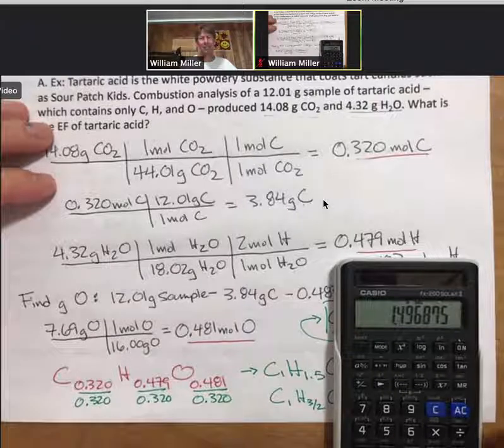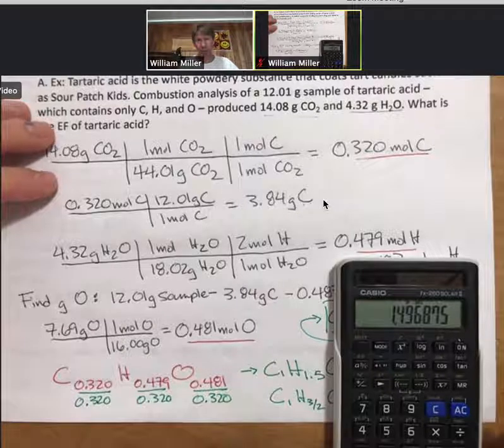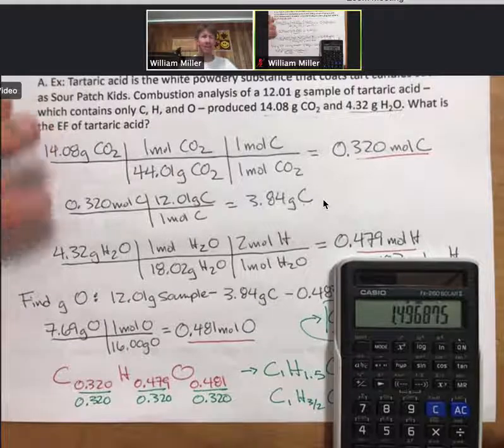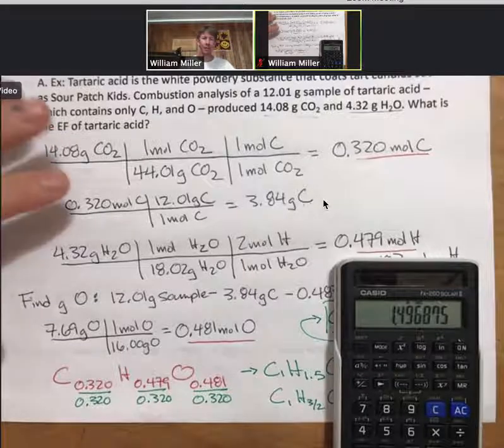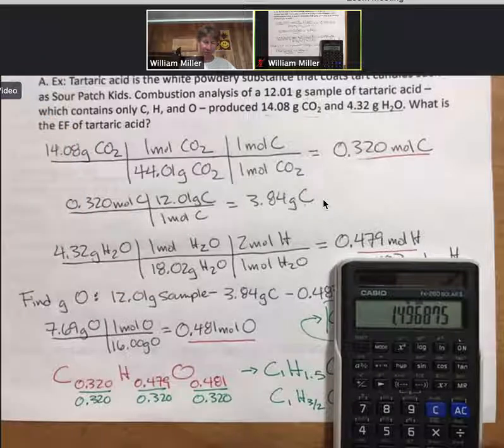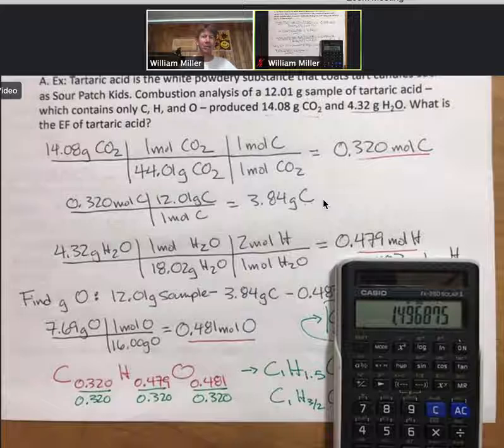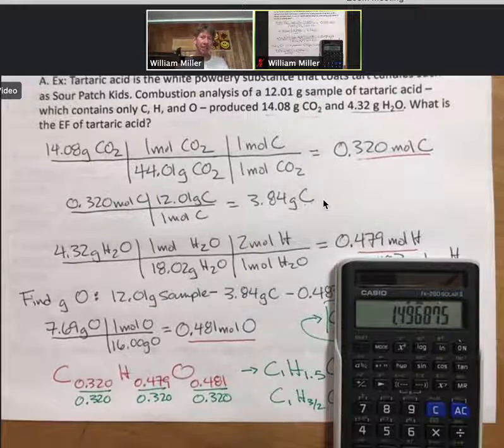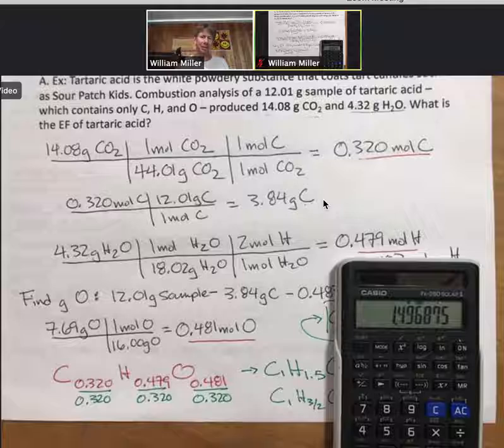So half numbers are okay for these kinds of problems. You may even see thirds, so 1.33 or 1.67, but that's it. Other than that, there'll be either whole numbers, half numbers, or thirds. And as you practice these on the homework and on the recitation that's coming up next week, you will get a sense of what is acceptable.